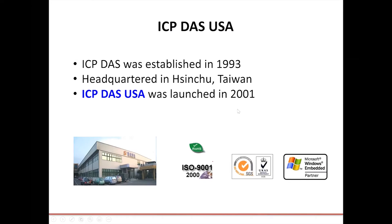Just a little bit about us. ICP-DAS was founded in 1993 and is located in Sinshu, Taiwan. ICP-DAS USA was founded in 2001 to support the North and South American markets. We're located in Lomita, California. We have over 200 R&D engineers, and we work closely with them to develop new products and to support our customers. Most of our products are RoHS compliant, meaning they're lead-free. We are ISO 9001 certified in the U.S., SGS certified in the U.K., and we're a Windows embedded partner.